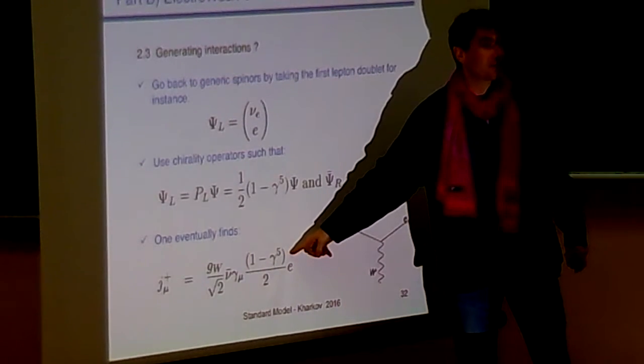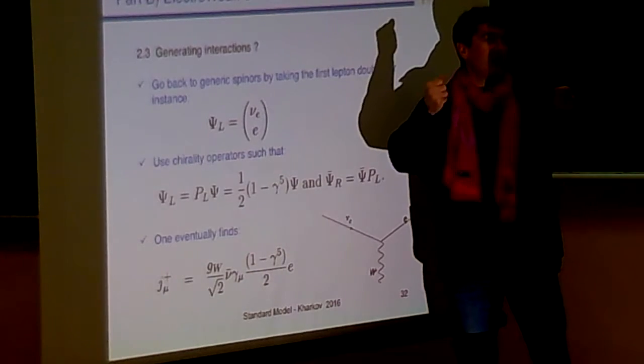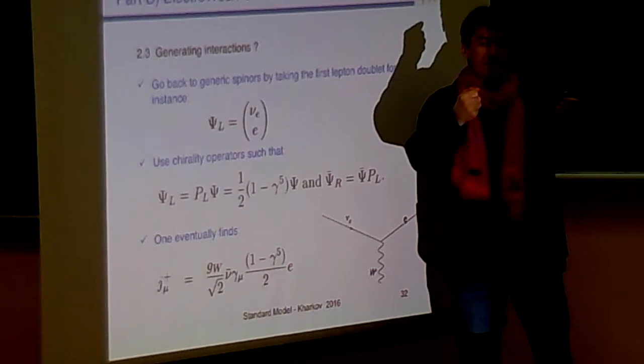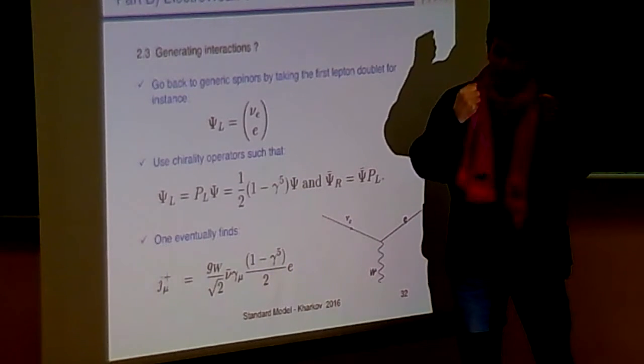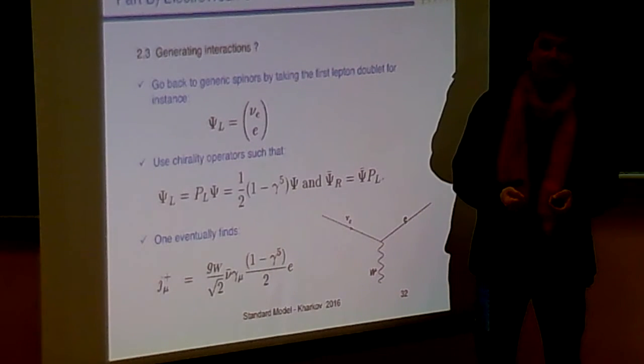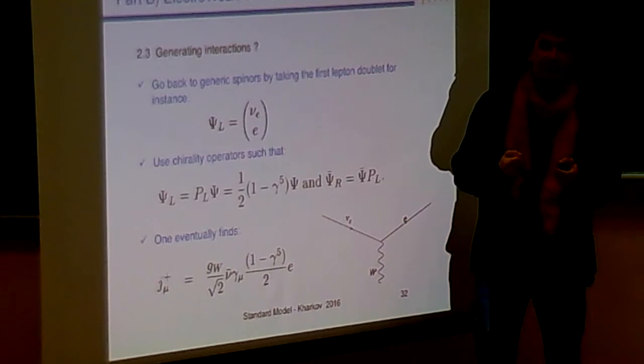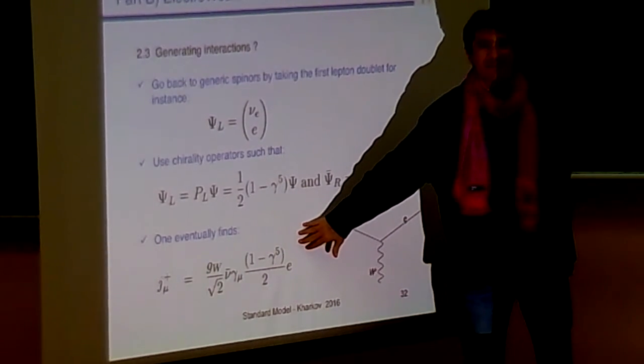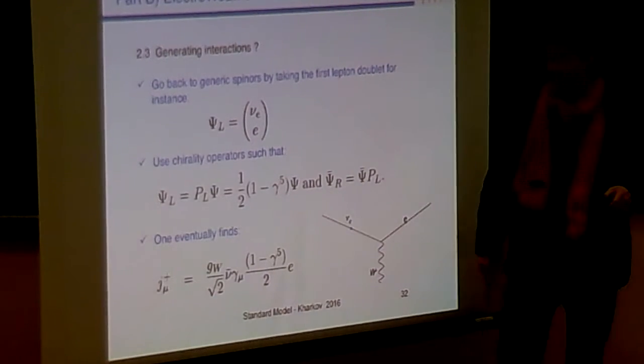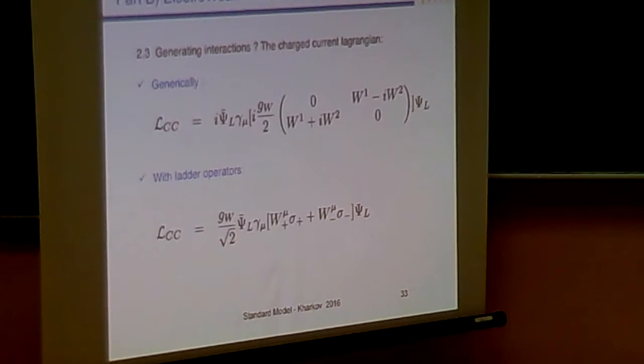So we find back the thing that we already derived. But from first principles, we have said that the interaction is generated by SU2 left. You feel the difference? I mean, this is a theory. That was a model.